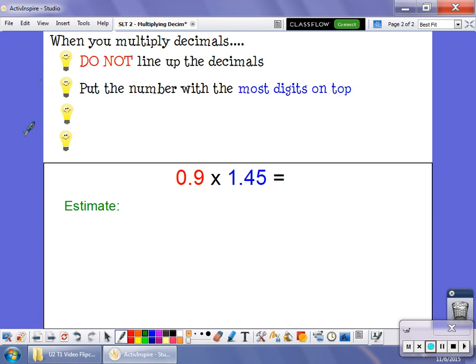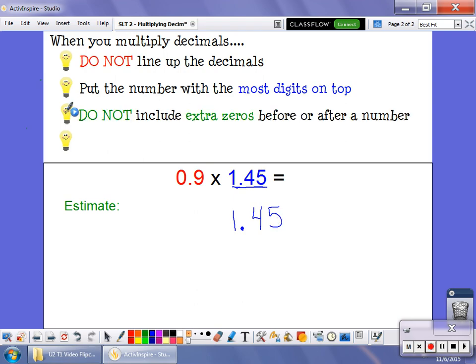The second thing to keep in mind is that when you multiply, the order doesn't matter. If I do 2 times 3 and get 6, it's the same as doing 3 times 2. So when you're multiplying decimals, the easiest thing to do is to put the number with the most digits on top. So even though this number comes second, when I write my problem, I'm going to put that as my top number. And before I write the second number, I want you to look at this next thing to keep in mind.